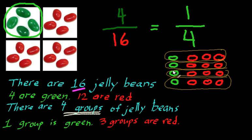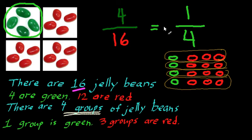Hopefully that made some sense. We're going to come back to this topic later in terms of thinking about equivalent fractions. In general, there are different ways to write the same fraction — you can write four over 16 as one over four, because four out of 16 is the same as saying one out of four. Thanks a lot, and I'll see you in the next video.